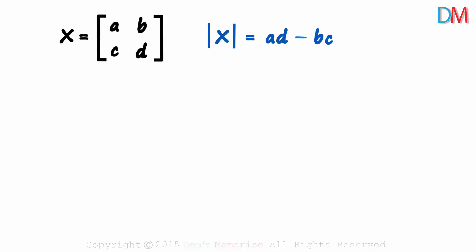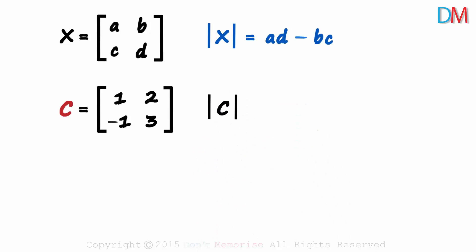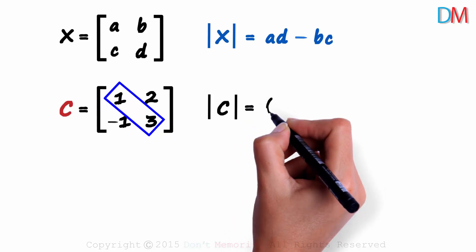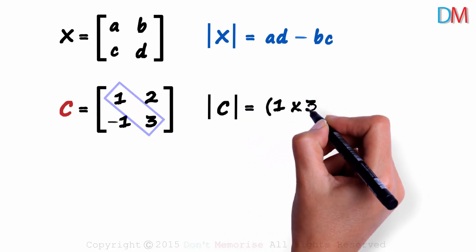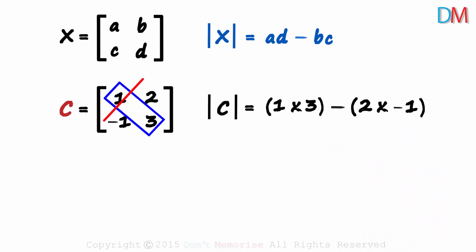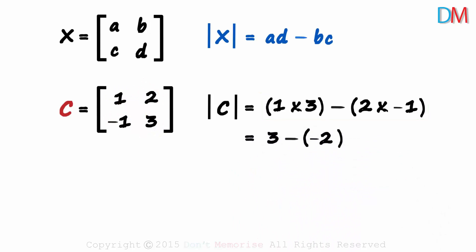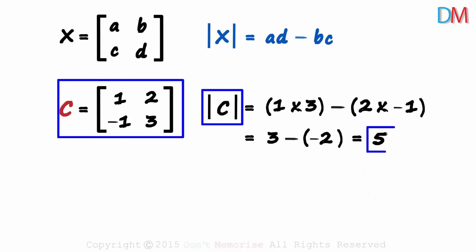Let's try it out with numbers. Here's matrix C. The determinant of C will be the product of these two elements: 1 times 3, minus the product of these two elements: minus 2 times minus 1. This will equal 3 minus minus 2, which gives us 5. The determinant of matrix C is 5.